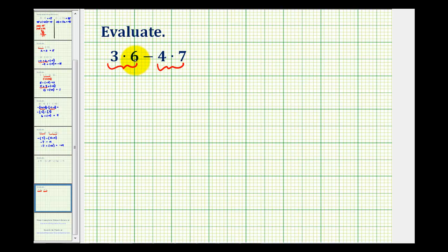So 3 times 6 is 18, and 4 times 7 is 28, and then 18 minus 28 is equivalent to 18 plus negative 28.